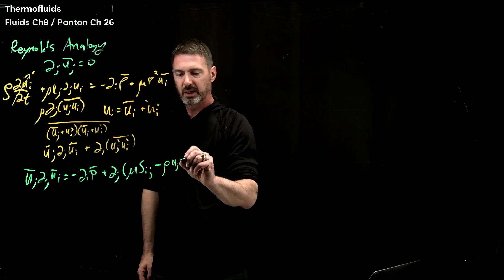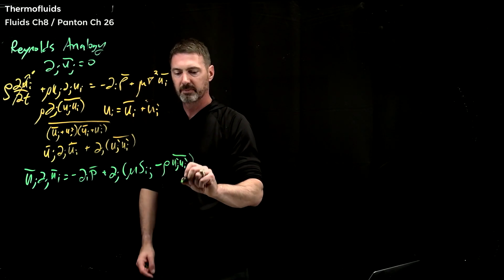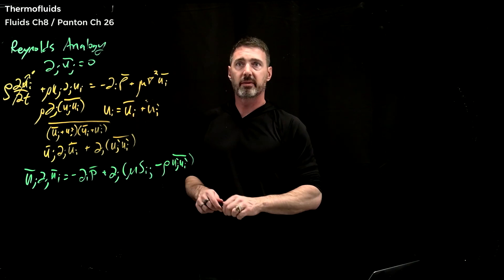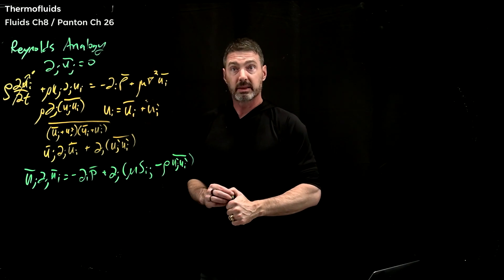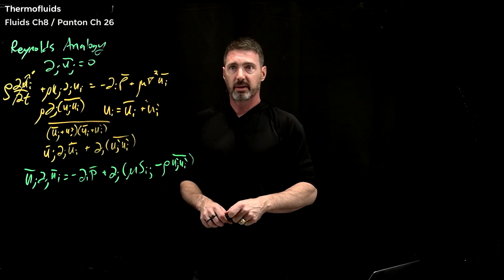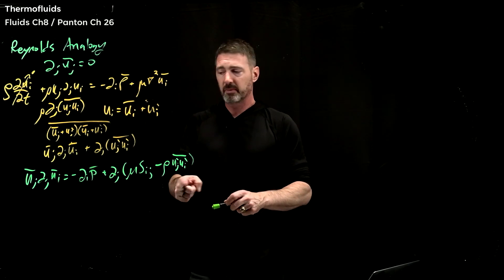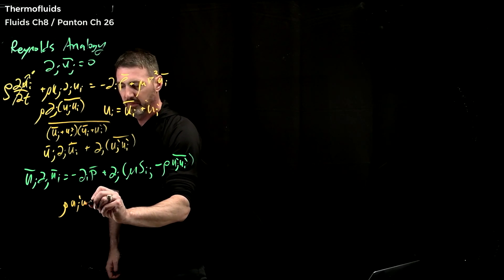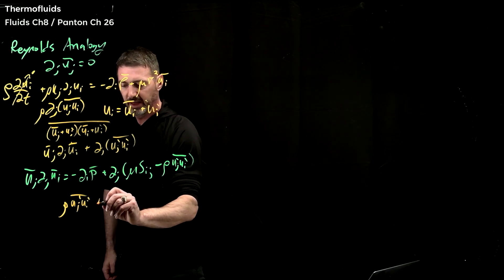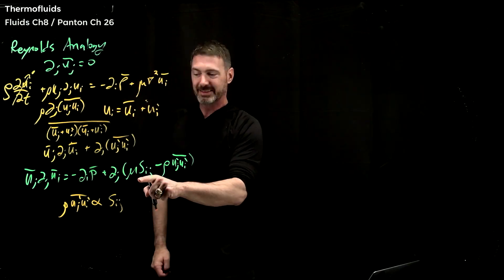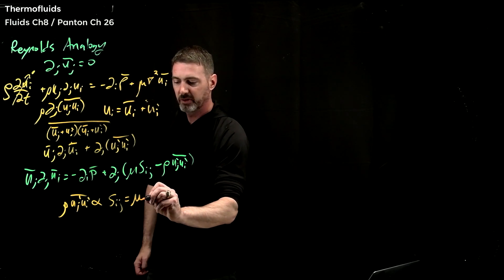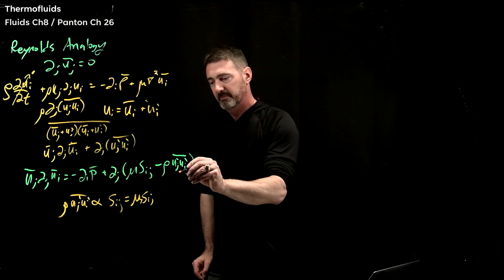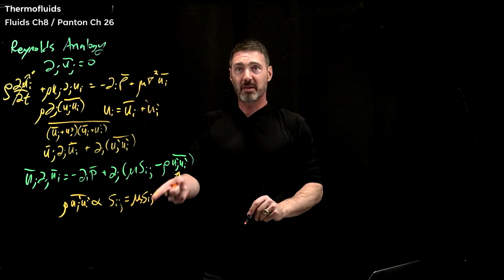This term — density times uj-prime ui-prime fluctuating averaged — if you model this accurately, you have it solved, but you can't. One of the simplest versions is to just say: I don't know what this term is, so I'm going to say that uj-prime ui-prime averaged is proportional to sij, because then it just adds up. So what people do is say this is a turbulent viscosity times sij, and then it just adds up.